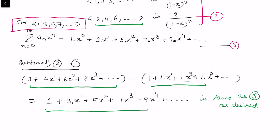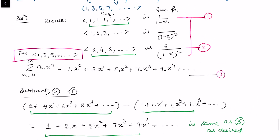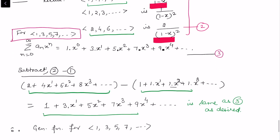Since the sequences match, the generating function for 1, 3, 5, 7, ... is the same as the subtraction of the generating functions from equations 2 and 1.